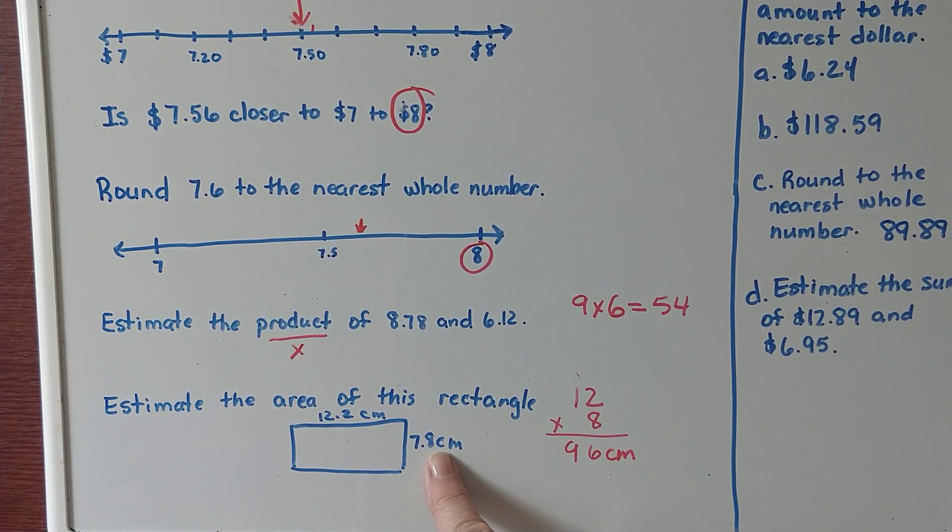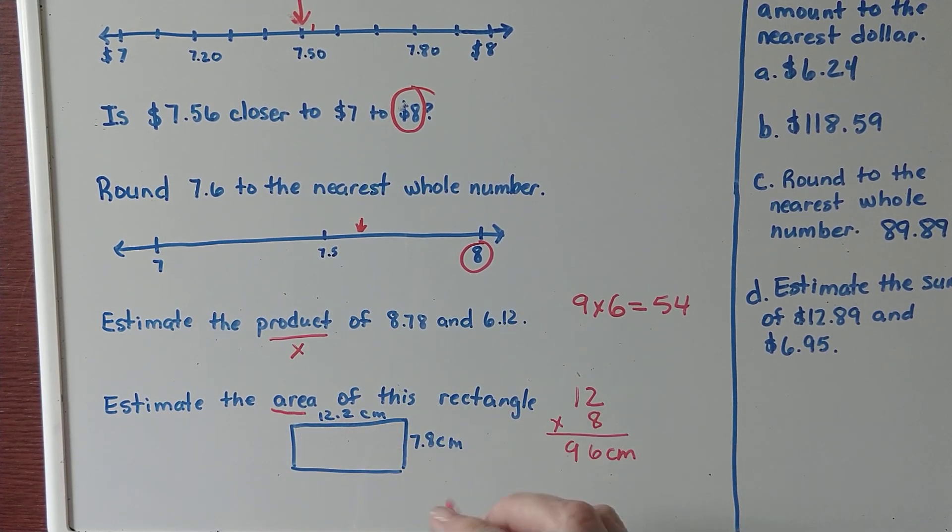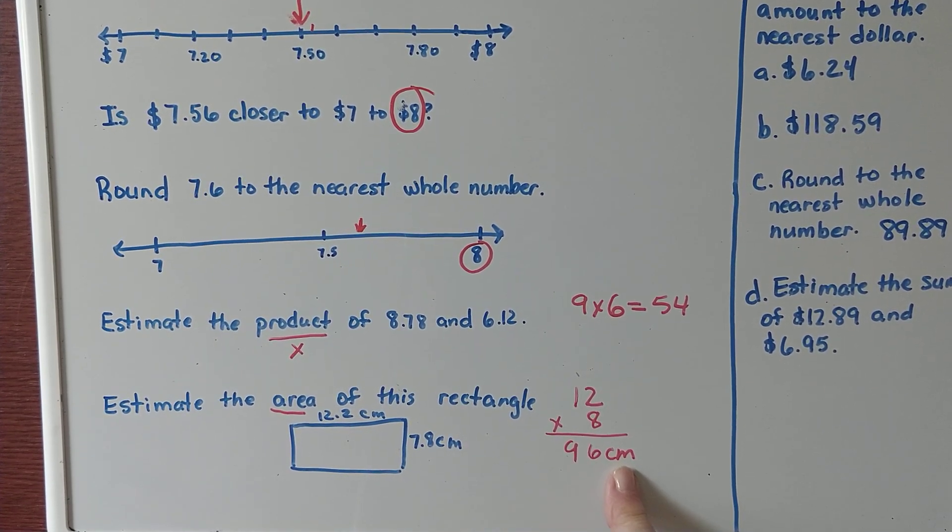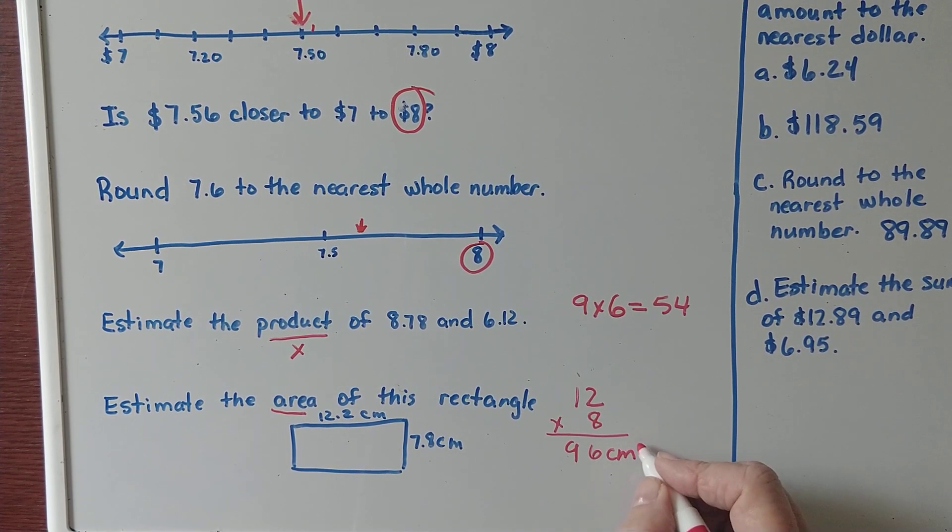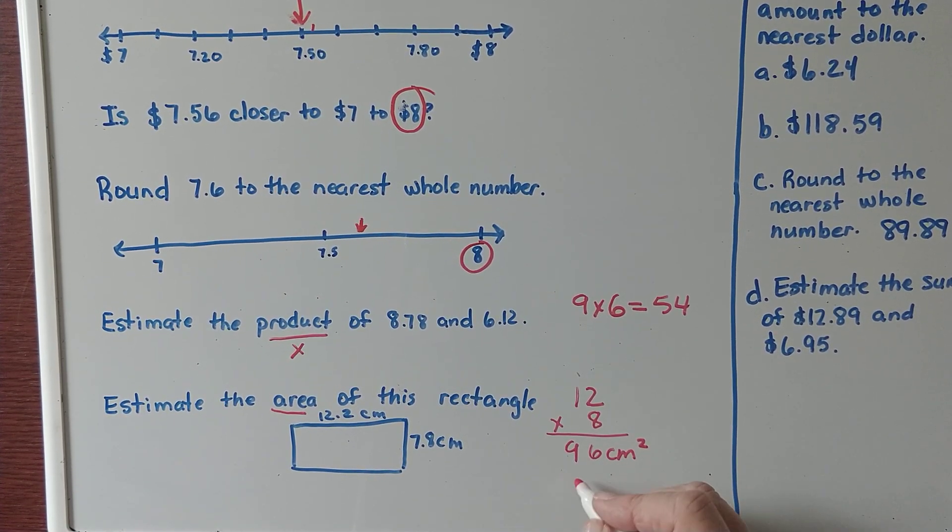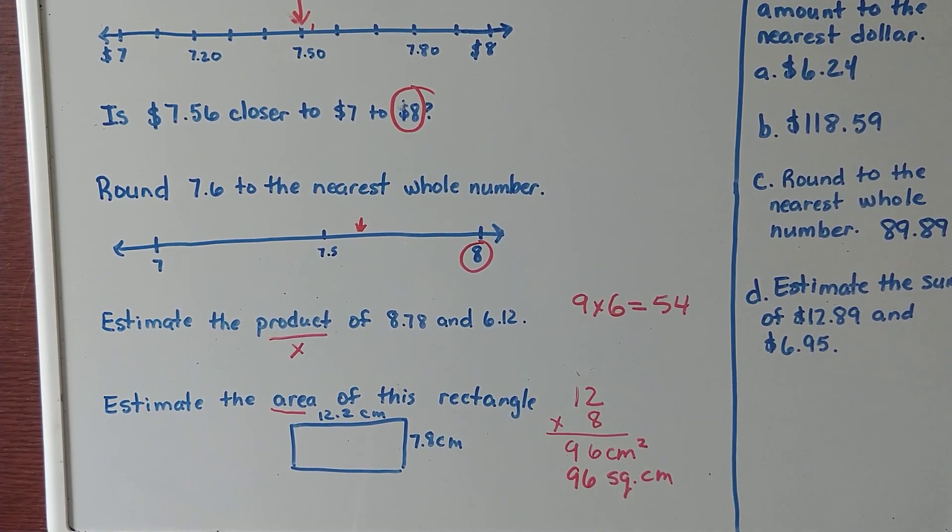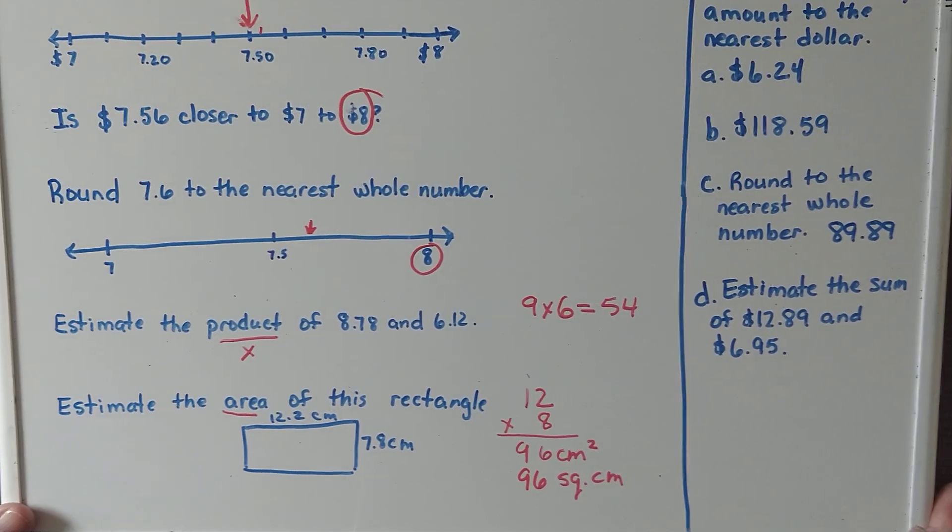And it is area, so is it just centimeters, or what is the right unit that we are using for this? It should be centimeters squared, or you could say 96 square centimeters. Either way you can put it.